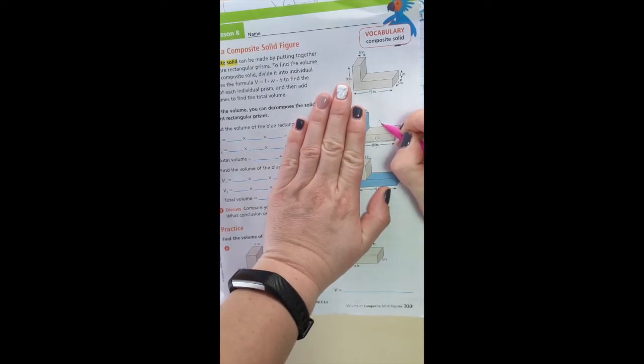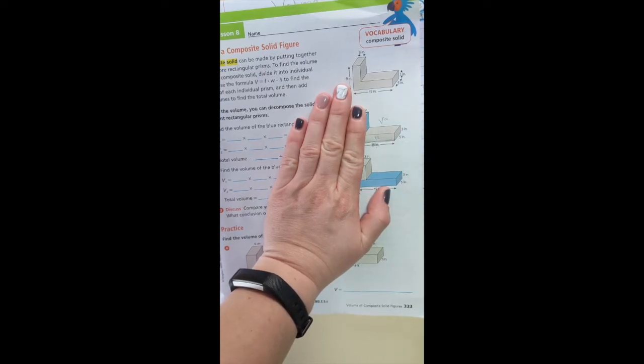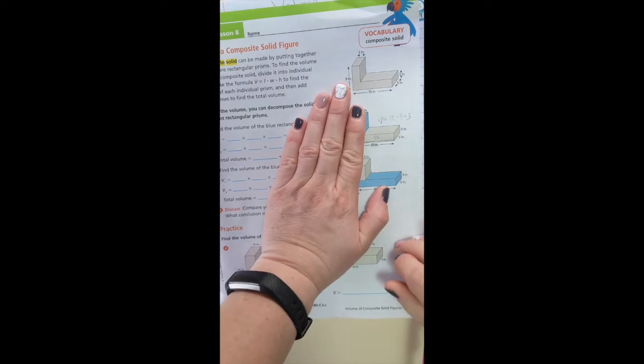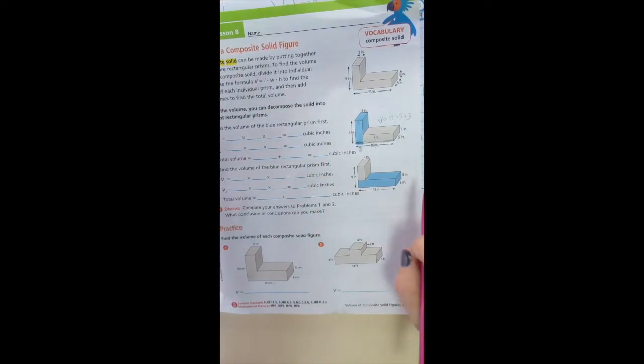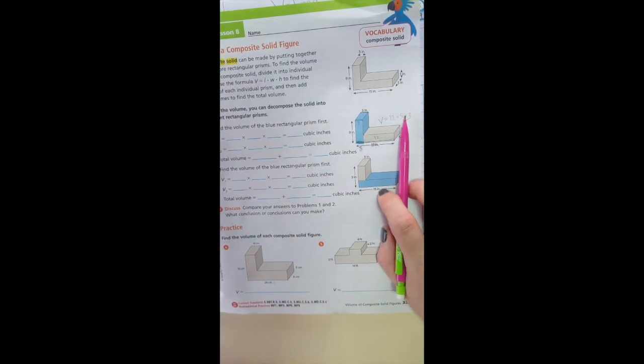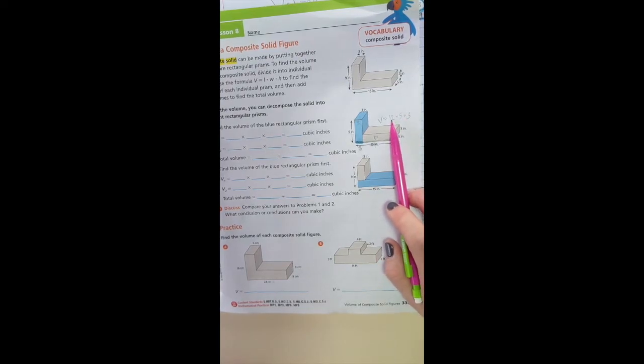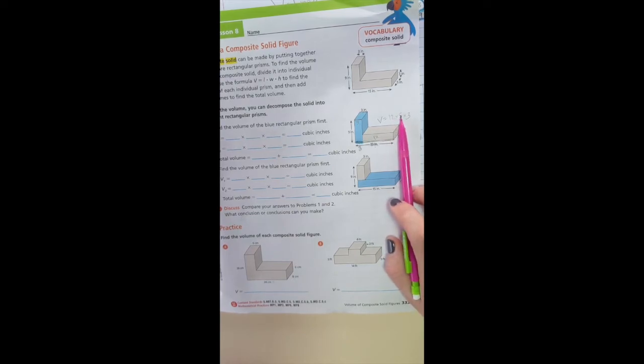So to find the volume of the gray, remember volume is nice. It doesn't bite. Just do length times width times height. So just do 12 times 5 times 3. There's a couple different ways you can do multiplication. You can combine the terms that you know easiest. But for me, doing 15 times 12 is not very easy. But I could do 60 times 3.